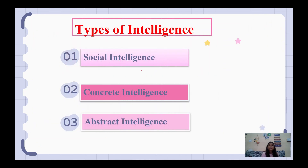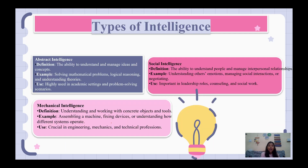First of all, we will discuss social intelligence, then concrete intelligence, then abstract intelligence. We will discuss these three types of intelligence with examples. E.L. Thorndike has given three types of intelligence. Concrete intelligence is also known as mechanical intelligence.